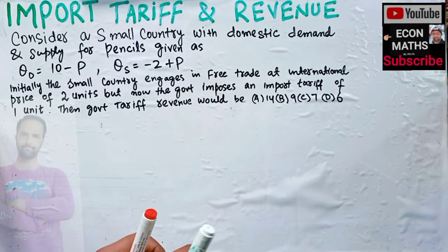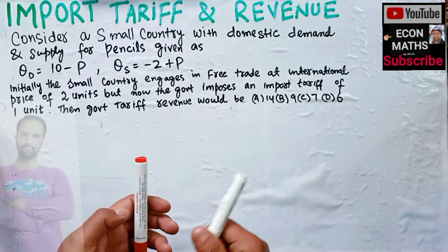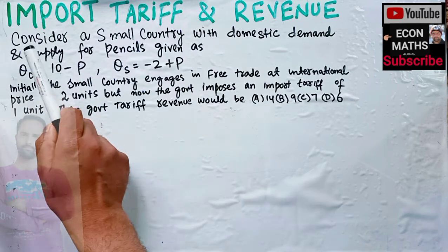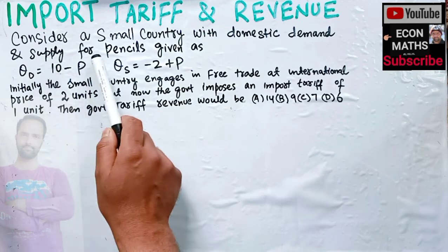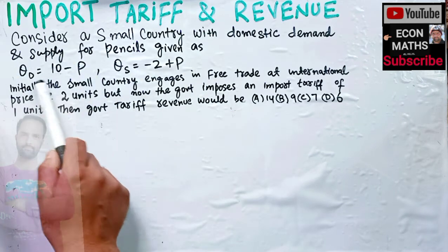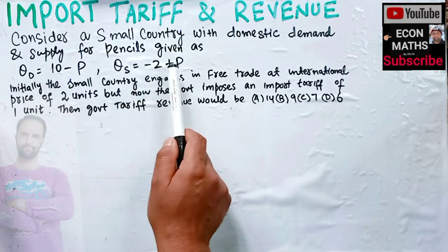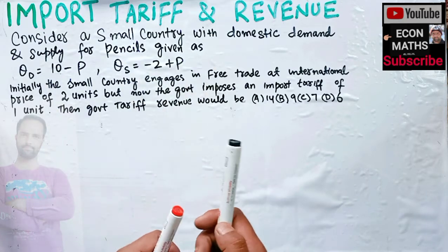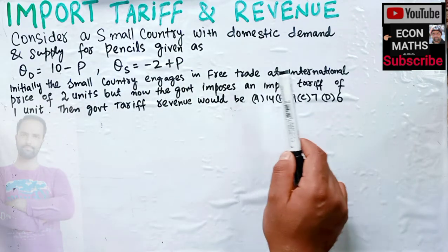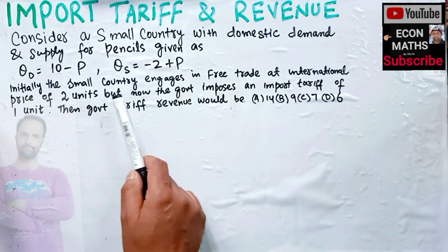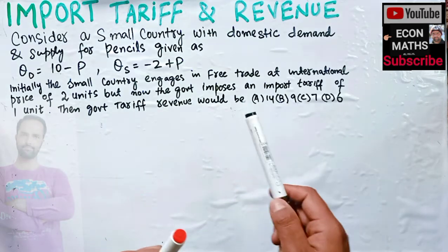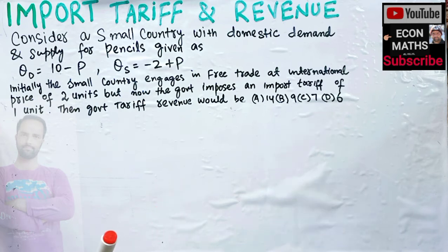In this video we will try to solve a question on import tariff and revenue. This question was asked by a brother on the Econ Methods Telegram channel. The question is: consider a small country whose domestic demand and supply for pencils are given as QD = 10 - P and QS = -2 + P. Initially the small country engages in free trade at an international price of two units, but now the government imposes an import tariff of one unit. What would be the government tariff revenue? The options are 14, 9, 7, and 6.